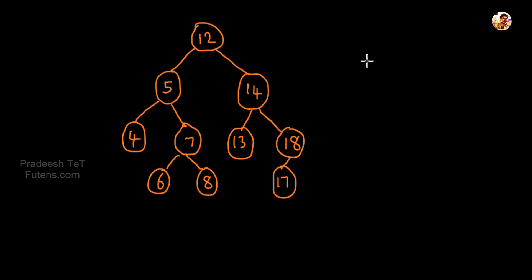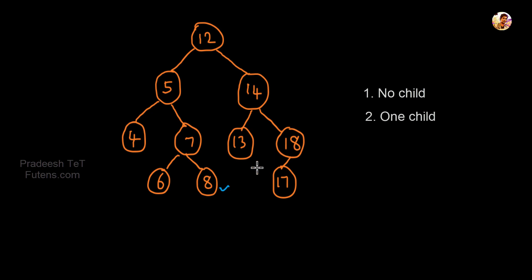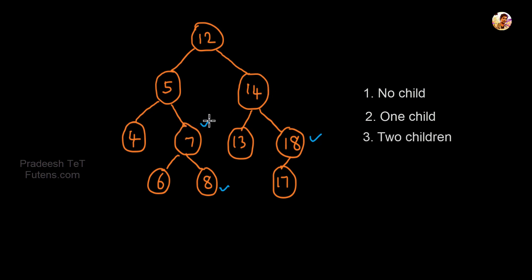There are 3 scenarios. The first scenario is no child — the node we delete has no child. The second scenario is one child — if we delete the node, there is one child. For the third scenario, we delete a node that has 2 children: a left child and a right child.